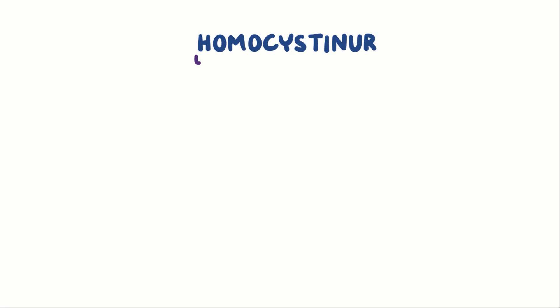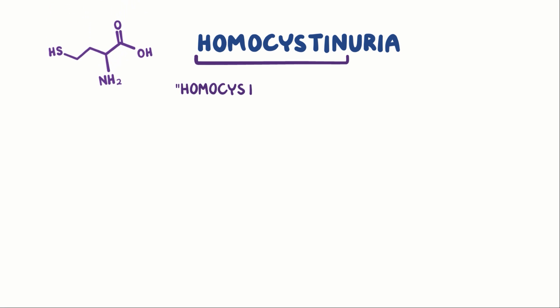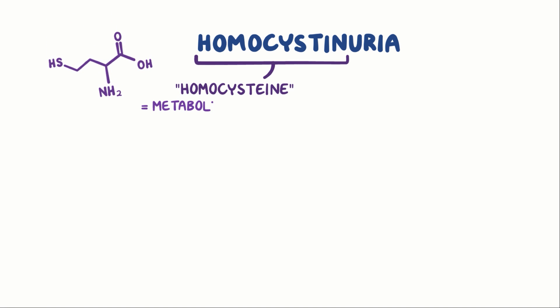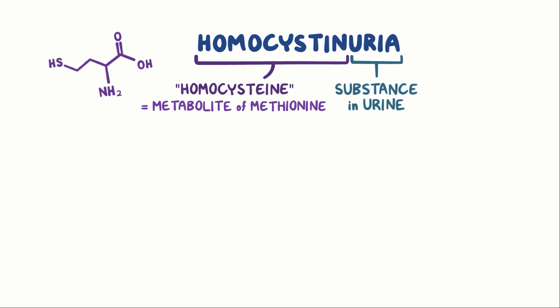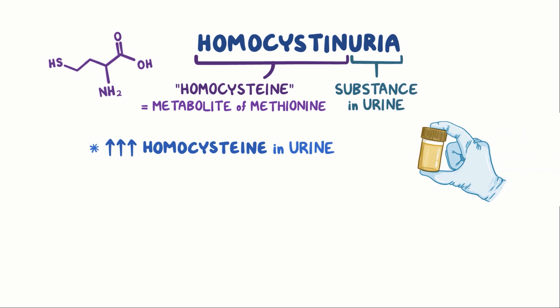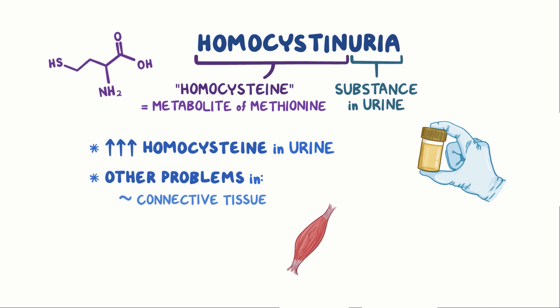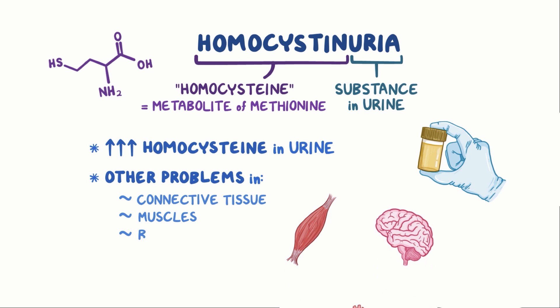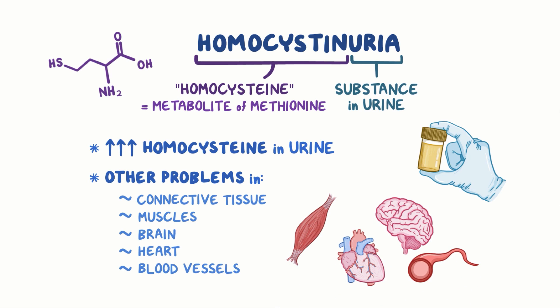In homocysteinuria, homocysteine is a metabolite of the amino acid methionine, and 'uria' means a substance present in urine. So people with homocysteinuria have large amounts of homocysteine in their urine, as well as other problems in the connective tissues, muscles, brain, heart, and blood vessels.